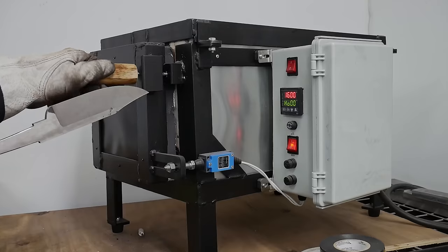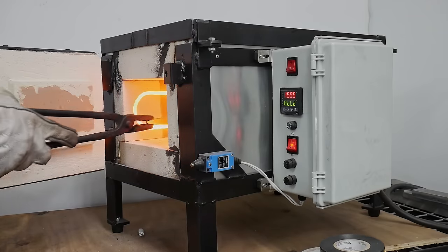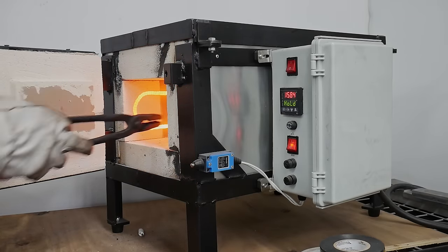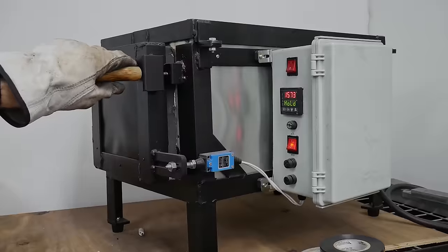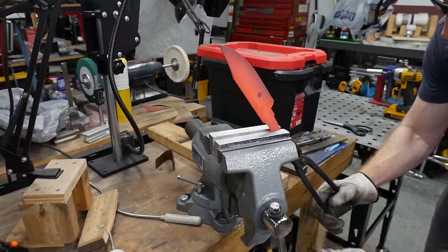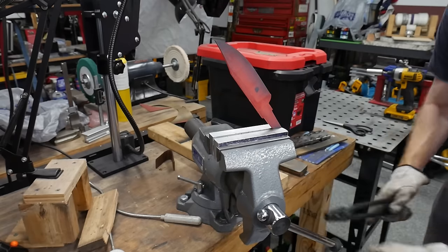I didn't show it but after forging I annealed the blade. I performed two normalization cycles at around 1600 degrees Fahrenheit before quenching at around 1525 degrees in Parks 50 with this 1084 blade.